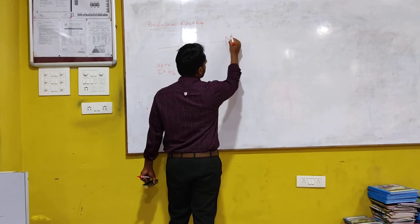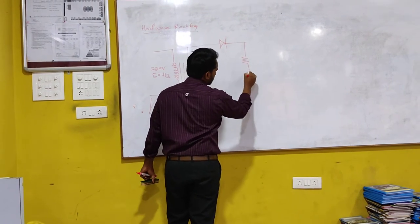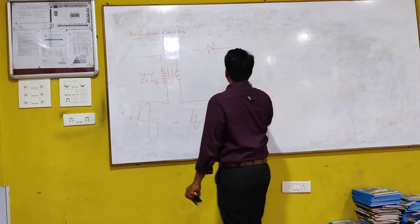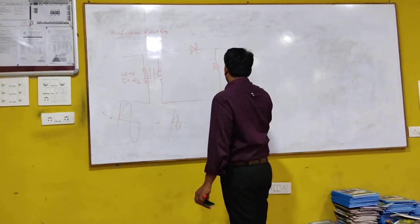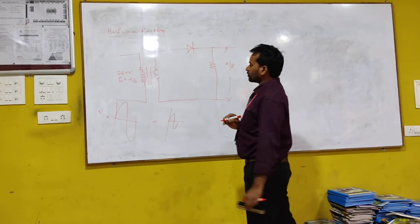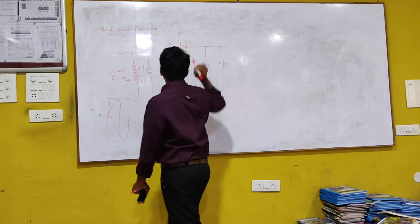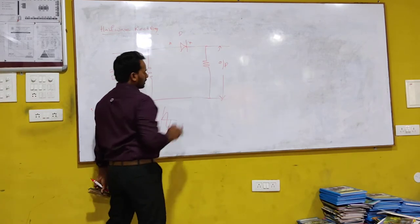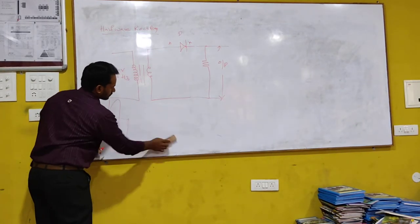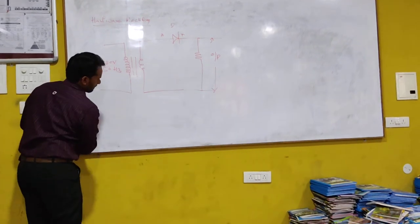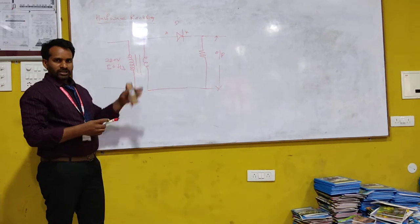In the half-wave rectifier, I use only a single diode. I am using one resistor as a load to collect the output. Here I take the output across the load resistor. This is the diode and this is the load resistor.